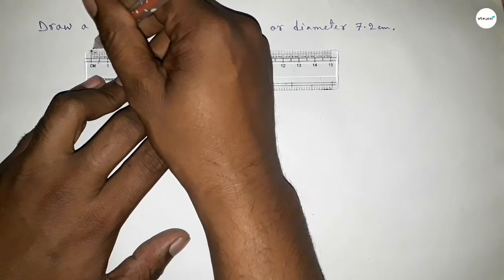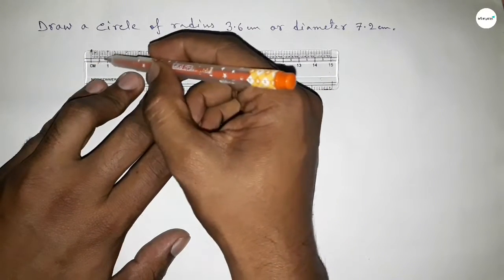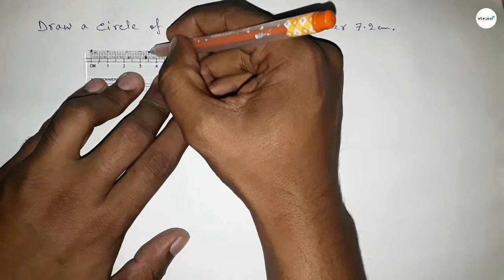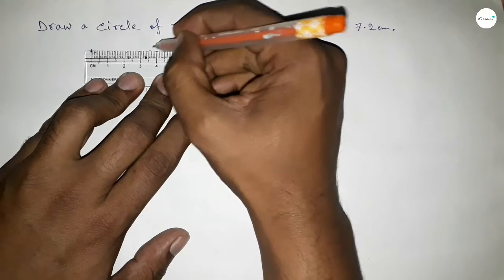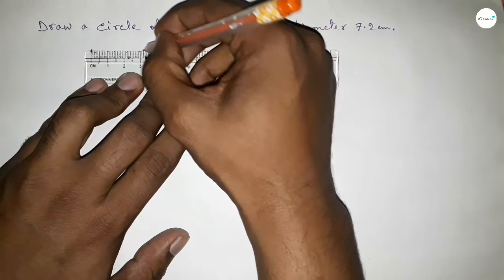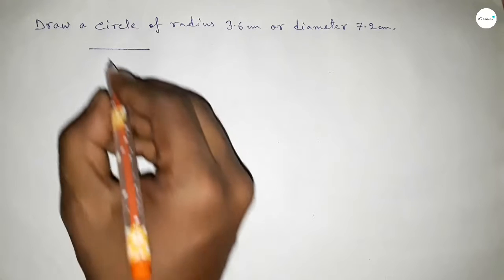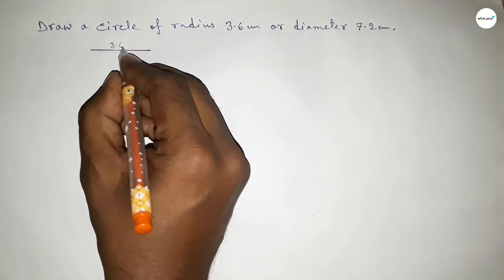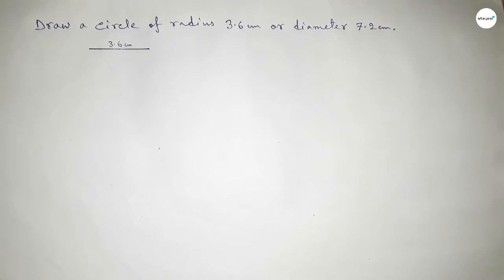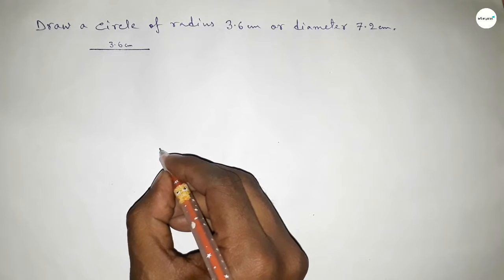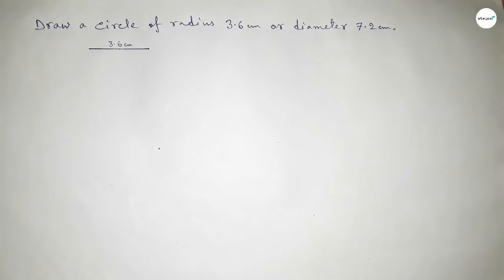So taking length zero, starting one, two, three, and this is 3.5 and this is 3.6 centimeter. And we know that radius of a circle is half of diameter. So this is 3.6 centimeter. Now taking here a point.